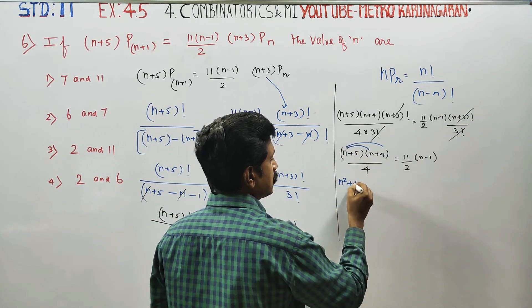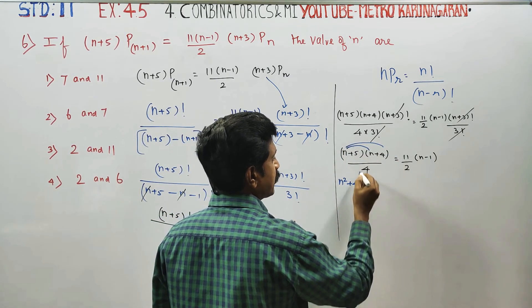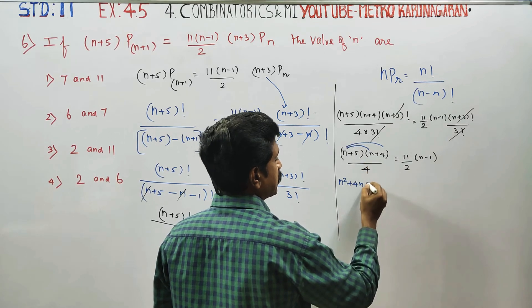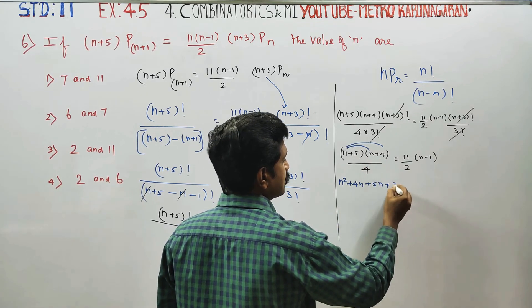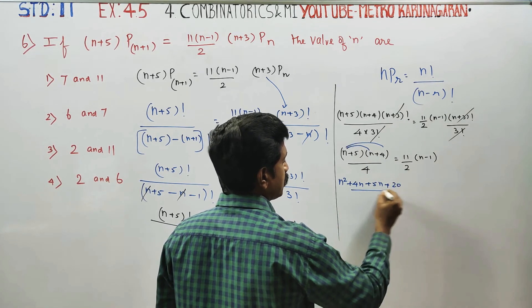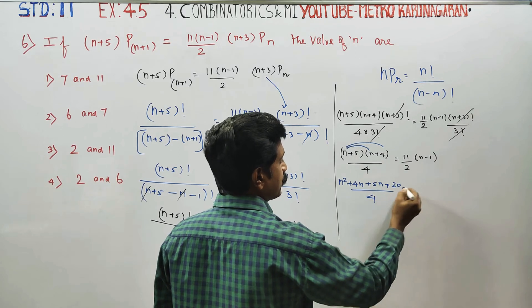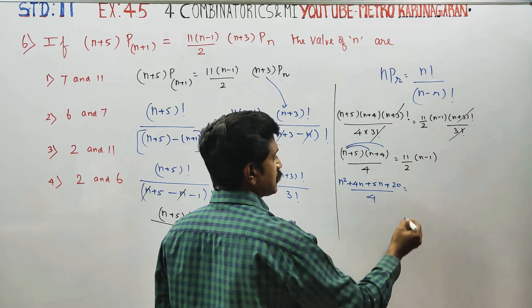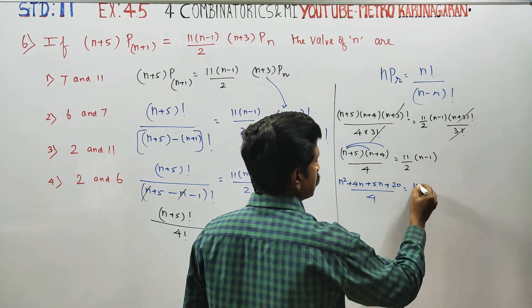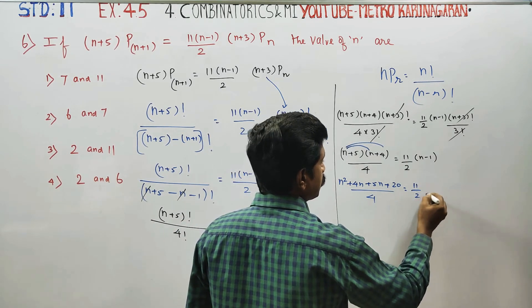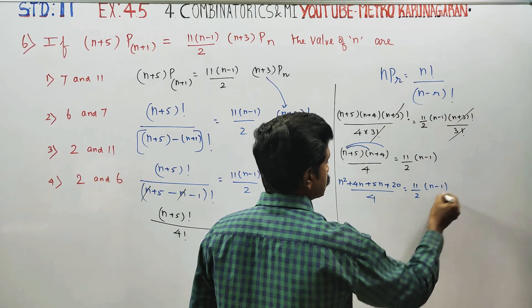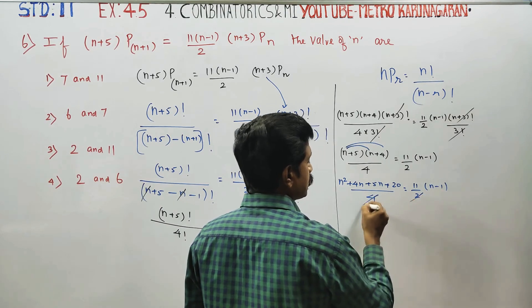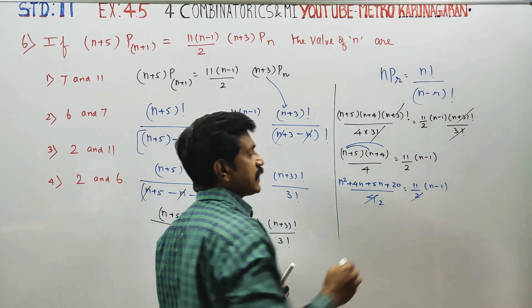2n squared plus 4n, 5 alumnus 5n, 5 forza 20 by 4 is equal to 11 by 2 into n minus 1. 2 times cancel.